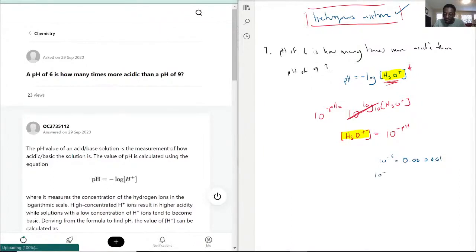And 10 to the negative 9 is equal to 0.000000001, because you should have 1, 2, 3, 4, 5, 6, 7, 8, 9. Perfect.